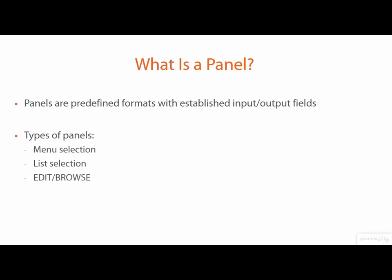In particular, the types of panels that we have involve a menu selection, a list option wherein we have a set of services where we can list through the different items that might exist within a data set, for example, and the other would be the edit and browse mechanism.